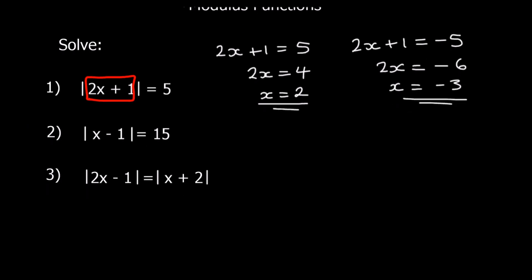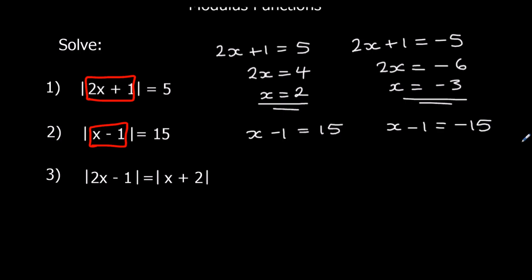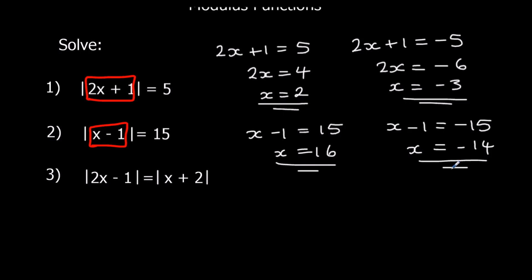For the second question, we want to find where |x − 1| = 15. We solve x − 1 = 15 and x − 1 = −15, because the modulus of minus 15 is just 15. So x = 16 or x = −14. Both of those make the modulus of x minus 1 equal to 15.